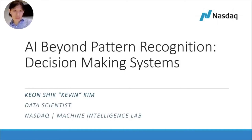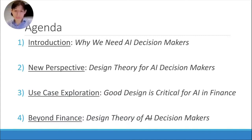So today I'm here to talk about AI beyond pattern recognition, particularly decision-making systems. Agenda for today: I'll first talk about why we need AI decision-making systems, introduce some new perspectives around what I call design theory of AI decision makers, explore some use cases, and finally conclude with how this design theory goes beyond finance and generalizes to not just AI decision-making systems but perhaps even all decision-making systems.